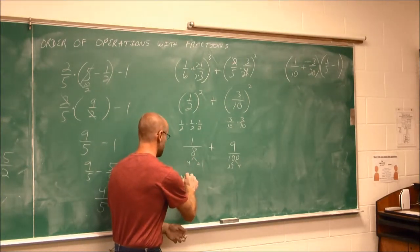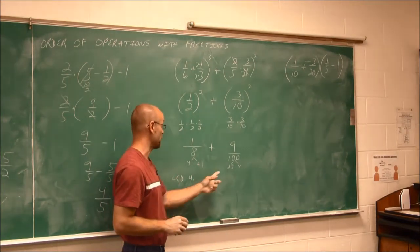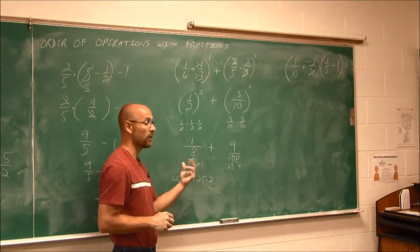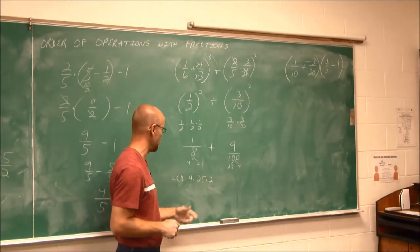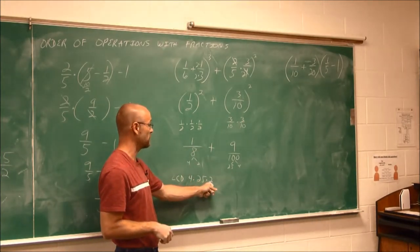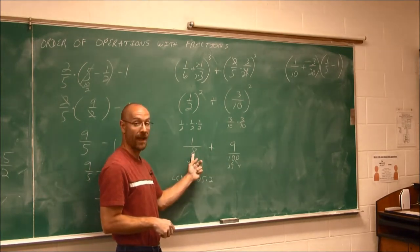So I'll write it right here, LCD, 4 times what are my unique factors, 25 and 2. So if I put these together, I'll have my LCD. And then I can change these and do that addition. 4 times 25 is 100, times 2 is 200. 200 is divisible by 100 and by 8.